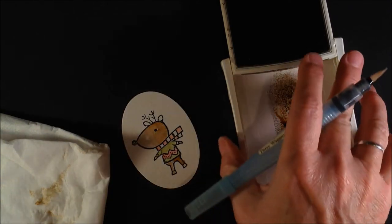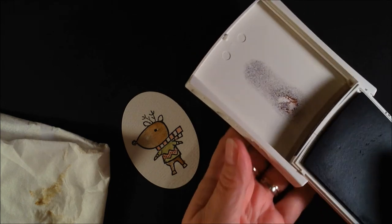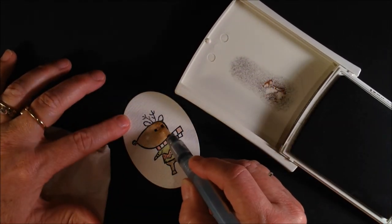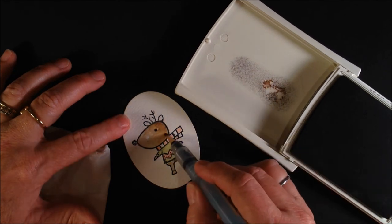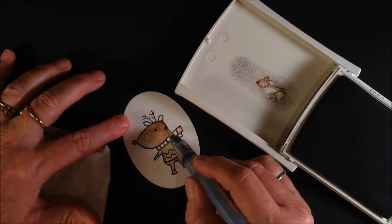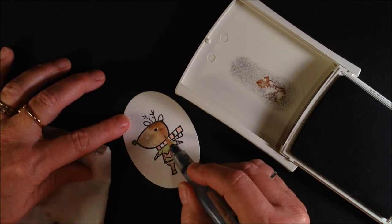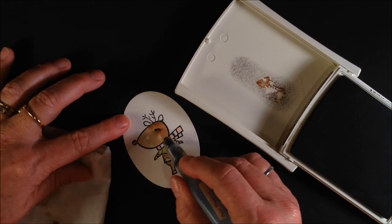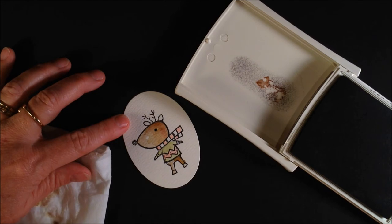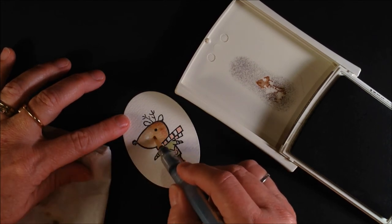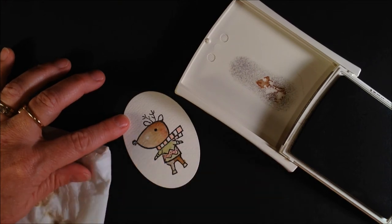And I'm going to take a little bit of Chocolate Chip and go just along the edge to get even some more depth. Now if you get too much color on there, you can go in and take your aqua painter and then you're going to go in and kind of blend those colors together. Like that.